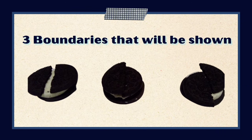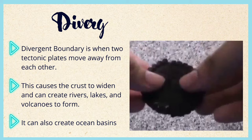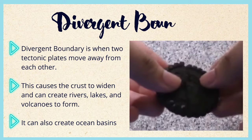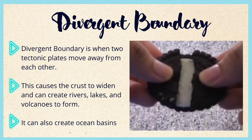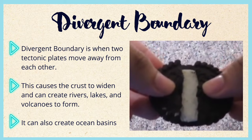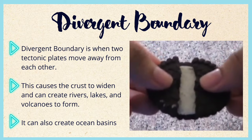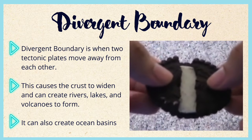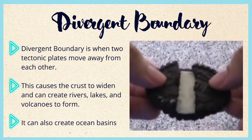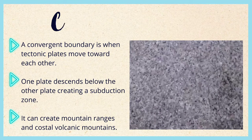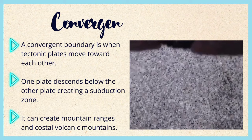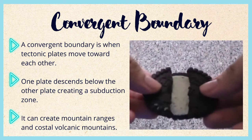There are three boundaries that will be shown. A divergent boundary is when two tectonic plates move away from each other. This causes the crust to widen and can create rivers, lakes, and volcanoes to form. It can also create ocean basins.